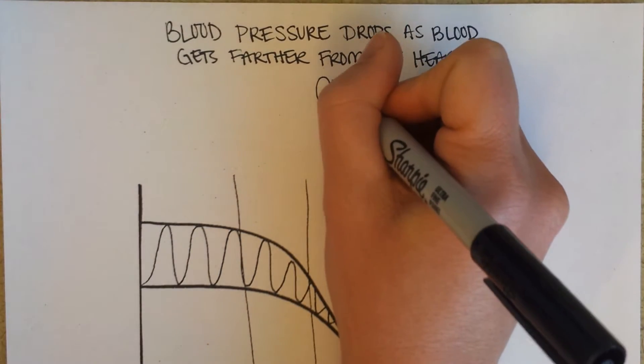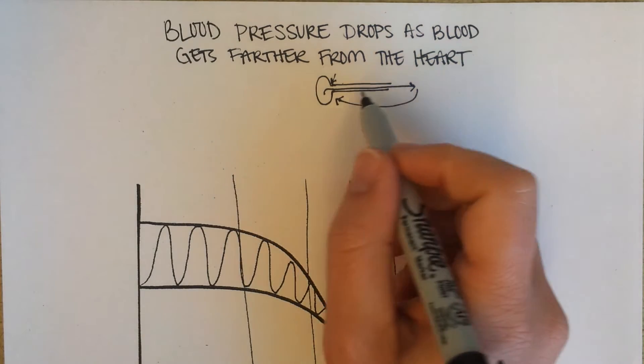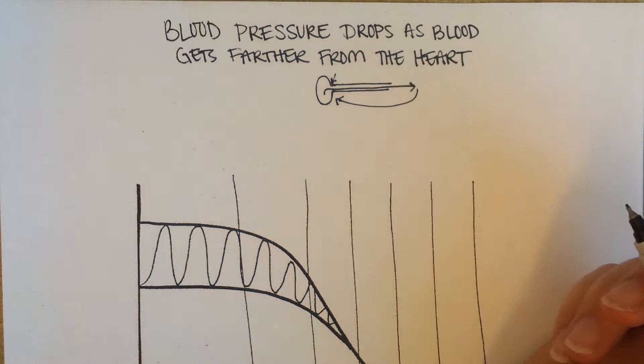So pressure is going to be highest at the moment of the pump in the aorta and then pressure is going to be very lowest at the vena cava.